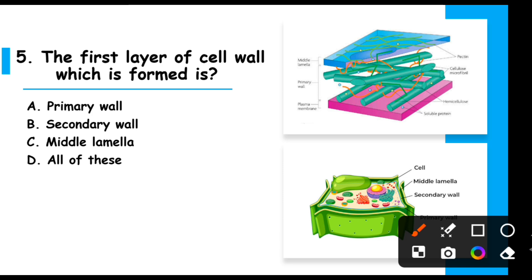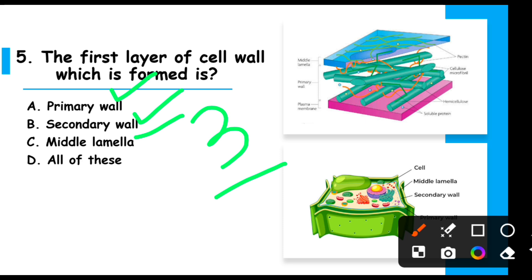MCQ 5: The first layer of the cell wall which is formed is — the cell wall has three layers: primary wall, secondary wall, and middle lamella. The first layer of the cell wall to be formed is known as the primary wall. After that comes the middle lamella, and the layer present on the inside of the primary wall is the secondary wall.